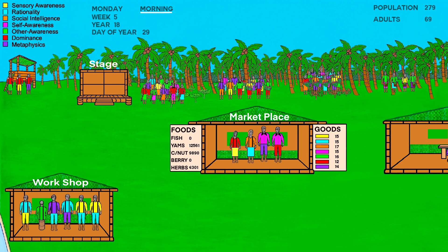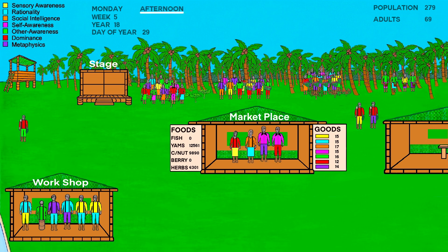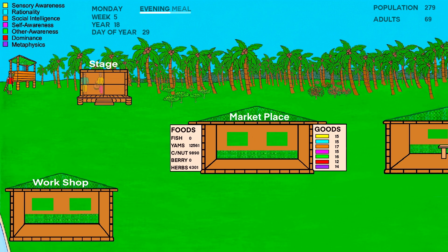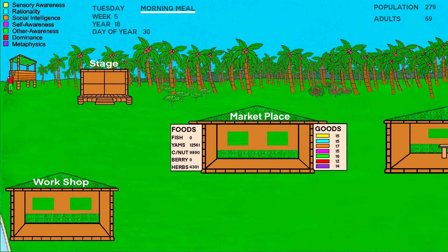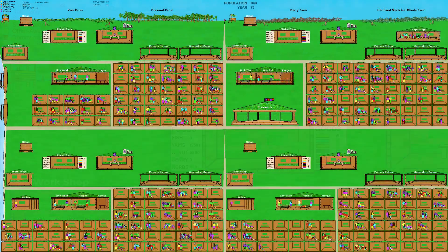Each Hume is at a particular location at a particular time of day based on their unique circumstances, and also based on what day of the week it is. After night time, the day begins again. So now let's see how the Humes have spread across the island over the course of 70 years, using the fast forward feature that was introduced in the previous stage.